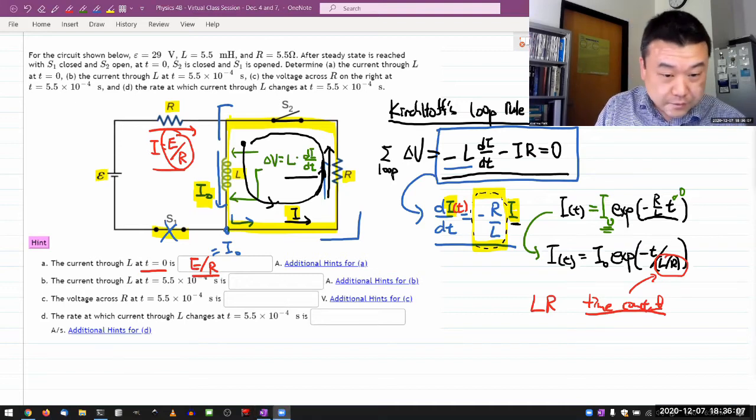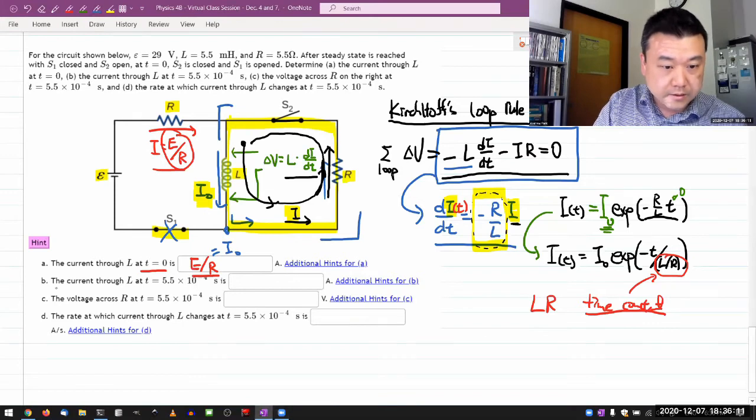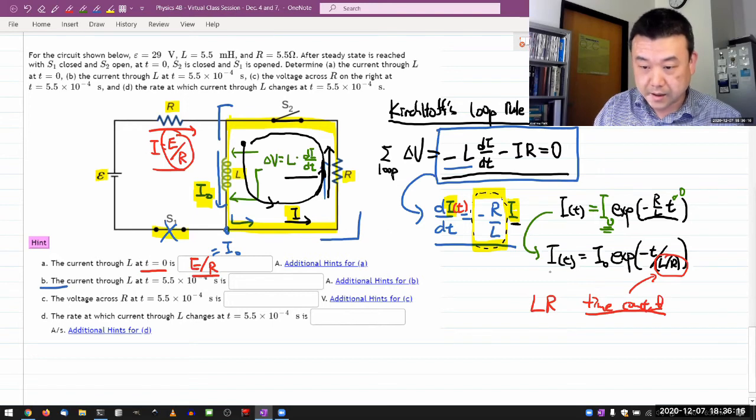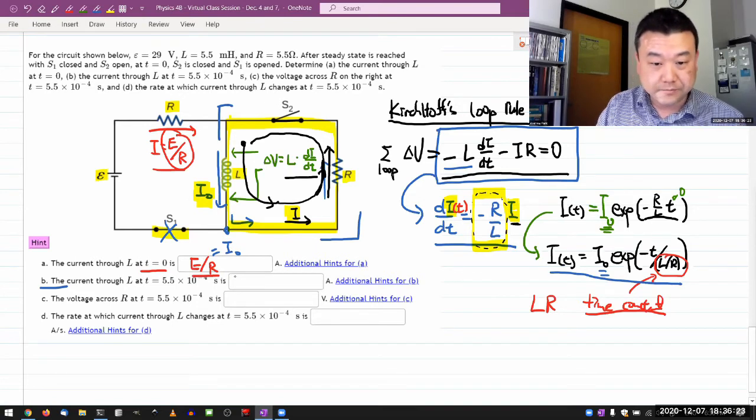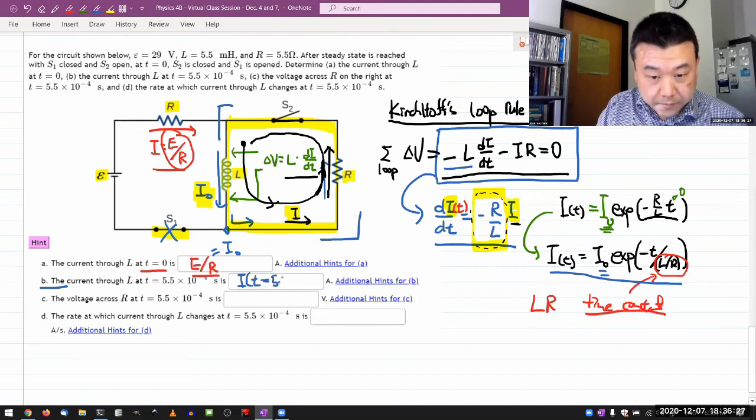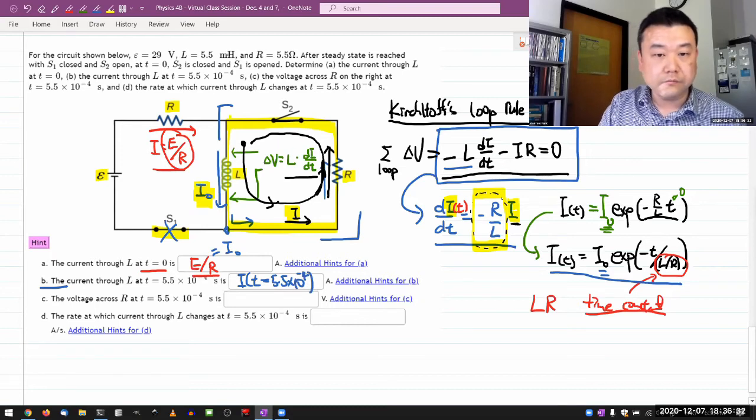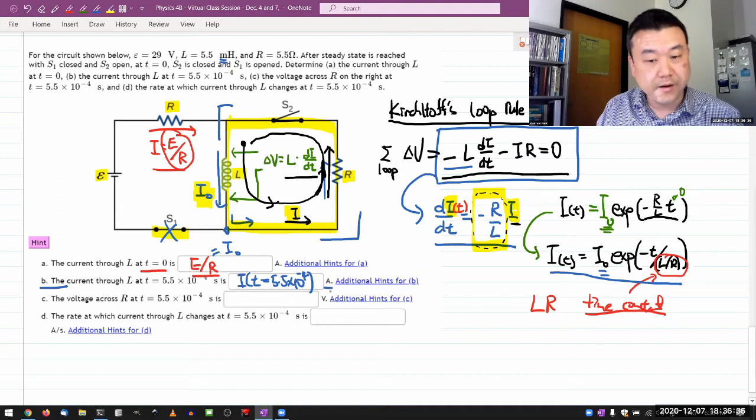So yeah, the rest of this question, well, part B definitely is just plugging in the numbers. Because it's asking for the current. I have expression for the current. I know I0. I know L and R. So all I have to do is simply plug in I at t equals 5.5 times 10 to minus 4. And, you know, watch the prefixes and make sure your final answer is in ampere. And that's it.